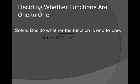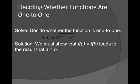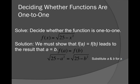What about this one? We have f(x) = √(25 - x²). So again, let's go through this whole plugging in a and b thing. Here you can see I've plugged a into f on the left side and I've plugged b into f on the right side.